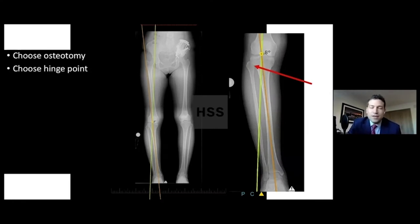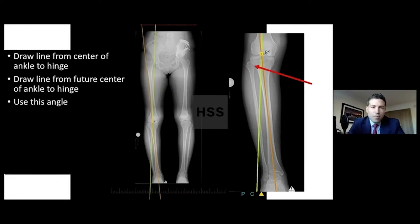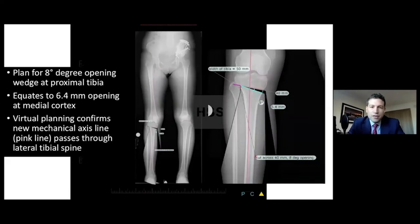So for the tibia, similar to what Taylor said before for the femur, we're going to choose our hinge point. These techniques are very well described at the top of the fibular head. We're going to draw from the future ankle to that hinge, and from the current ankle to that hinge. That's going to generate a magnitude of correction. Then you just convert that on a calibrated image and it can tell you what degree of wedge you need. In this case, it's an eight-degree correction and we need to open that wedge 6.4 millimeters.